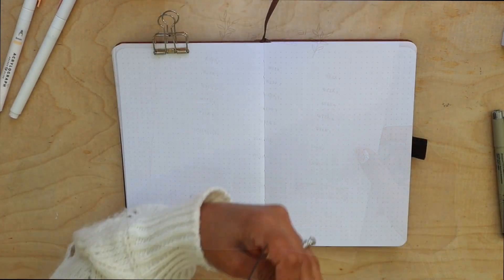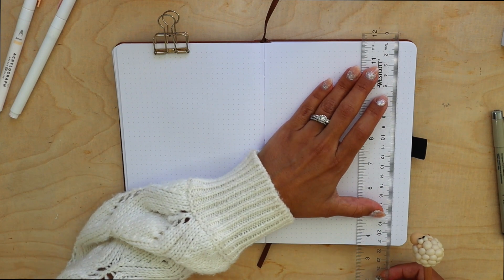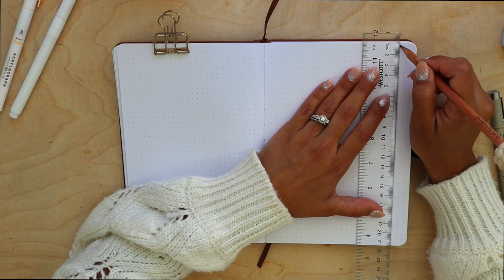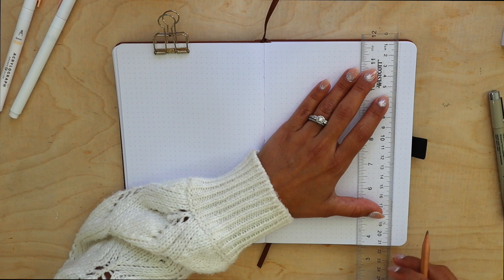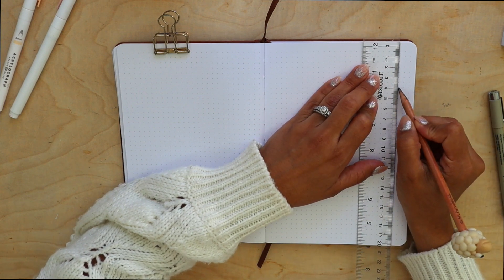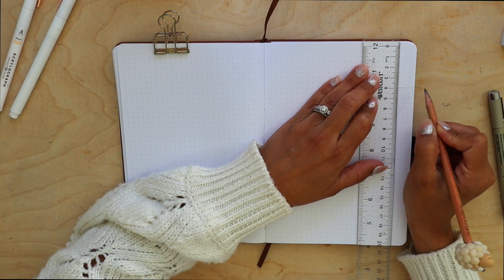Okay, the first thing to do is to measure the width of the tabs. I'm doing three dots of spaces and then I'm going to measure the length of the tabs. Since I'm doing five, each tab is going to be about four centimeters long.